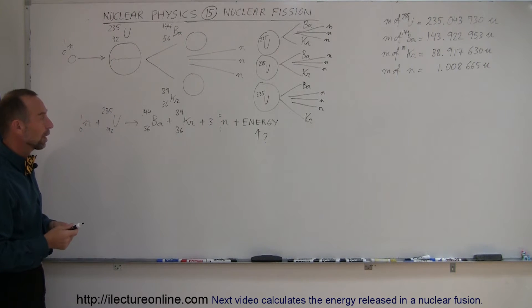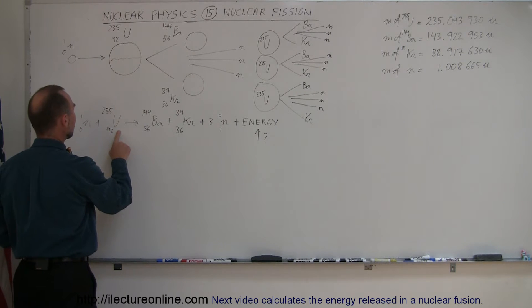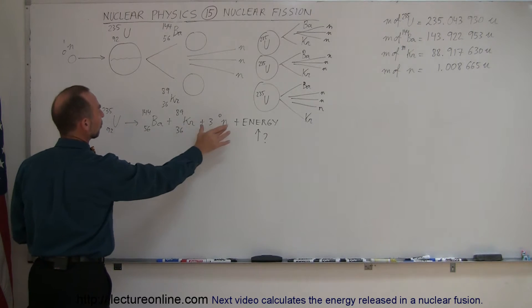So, what we have to do first is figure out how much mass was lost. What was the mass defect in this particular reaction? And what we're going to do is we're going to add one neutron to a uranium atom, and then we're going to add these two together plus three neutrons.